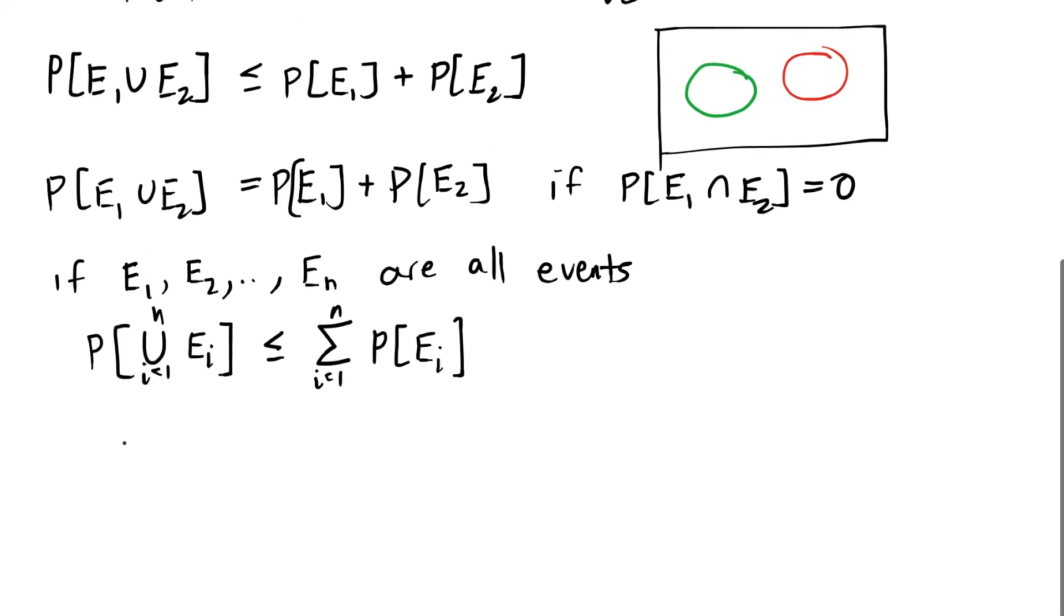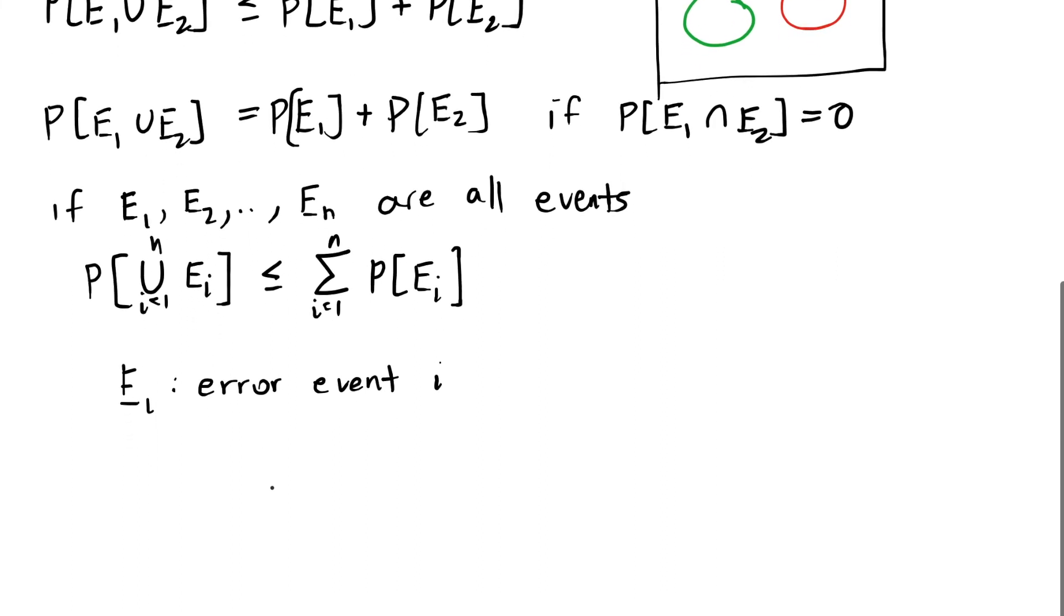And in communications, we're going to set EI to be certain error events. And we're going to calculate the total probability of error, which might include overlapping error probabilities by using this union of the EI events. This probability, the sum of all the probabilities, is going to be higher than or equal to the actual probability of error.